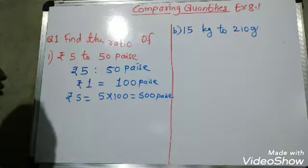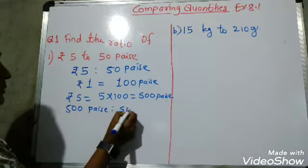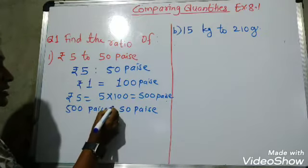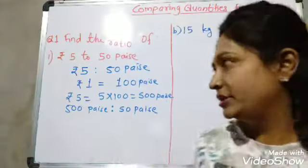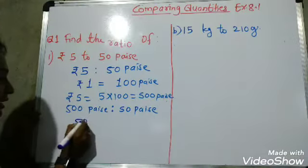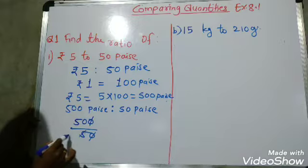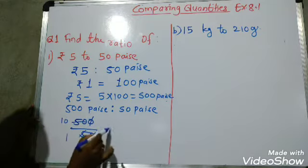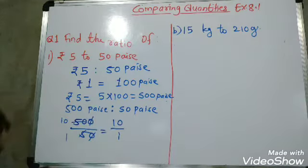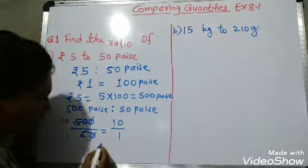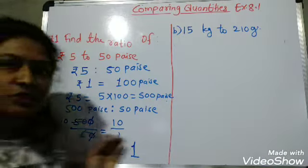So now we find the ratio of 500 paise to 50 paise. Whenever we find a ratio, we write it in fraction form: 500 upon 50. We cancel the zeros, giving us 50 upon 5, and after dividing we get 10 upon 1. We write this as the ratio 10 is to 1.